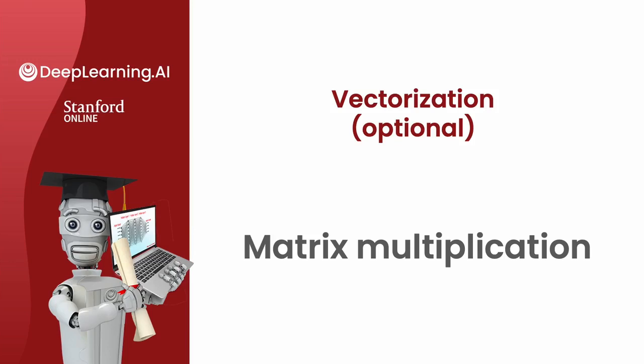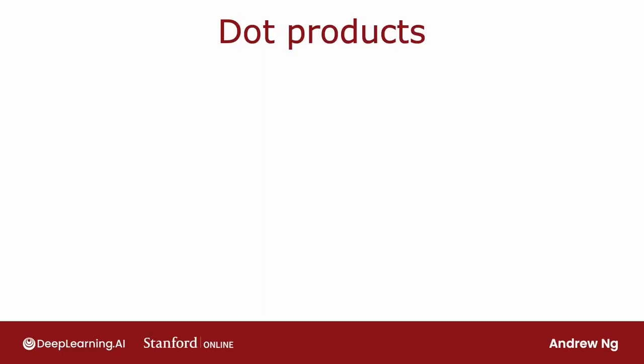You know that a matrix is just a block or 2D array of numbers. What does it mean to multiply two matrices? In order to build up to multiplying matrices, let's start by looking at how we take dot products between vectors.